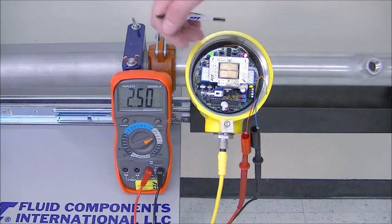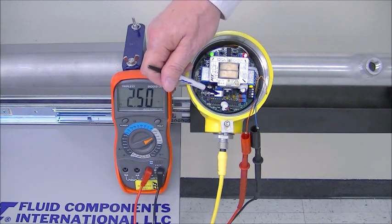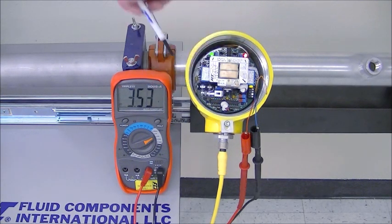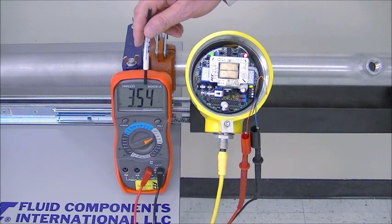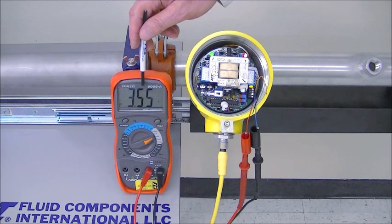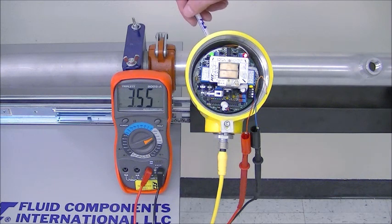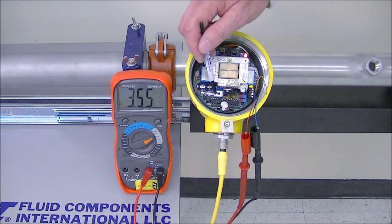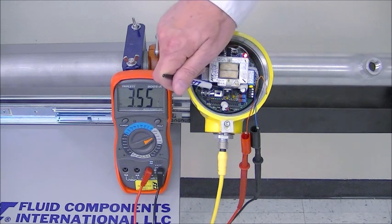So now, next thing we do is we put the switch back from the calibrate mode into the run mode. And you notice the voltage now changed to our no flow voltage again because now it's actually measuring the voltage that's coming from the sensor. When it's in the calibrate mode, it's measuring the voltage that I dial in. And when it's in the run mode, it measures the voltage that's coming from the sensor.